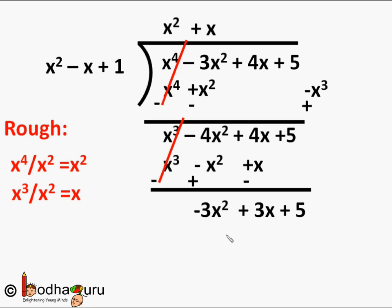We again repeat the process: we divide minus 3x² by x² to get the third term of the quotient. The x² terms cancel, giving us minus 3, which we write above.